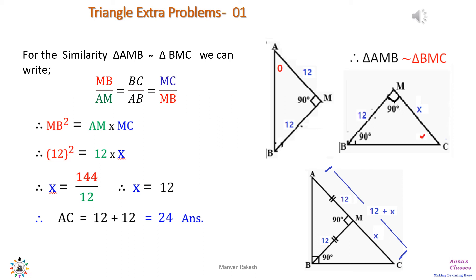Put the values. We get 12 square equals 12 times x. Therefore, x equals 144 upon 12. This gives us x equals 12. And AC was equals to 12 plus x. So put the value of x to be 12. We get AC equals 12 plus 12, or AC equals 24. And that is our answer.